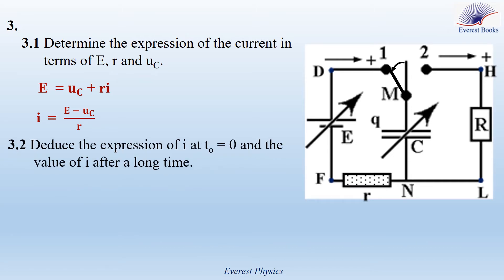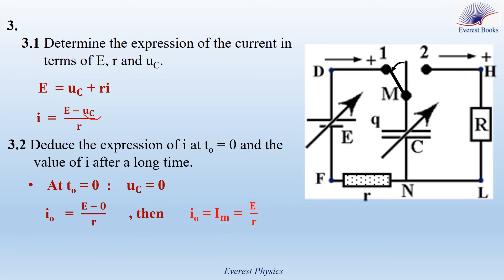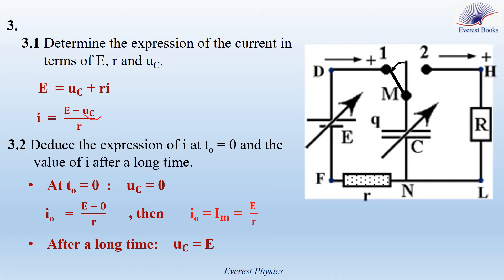Part 3.2: Determine the expression of the current at time zero and the value of I after a long time. Since the capacitor is initially uncharged, at time zero UC = 0. Substituting, I(0) = (E − 0) / small r = E / small r. This is the maximum current IM = E / r. After a long time, the capacitor is totally charged, so UC = E. Substituting, I = (E − E) / r = 0. After a long time, the current equals zero.